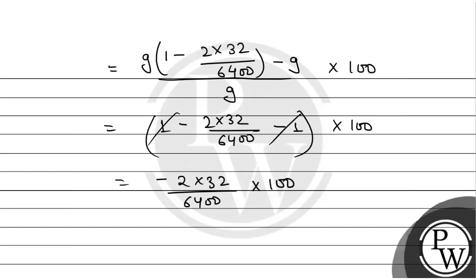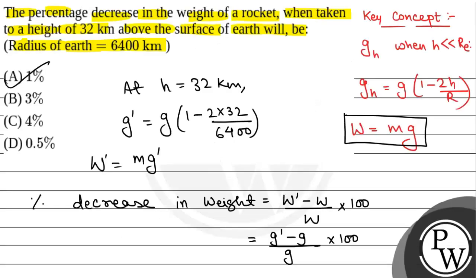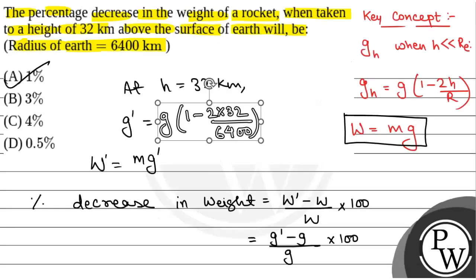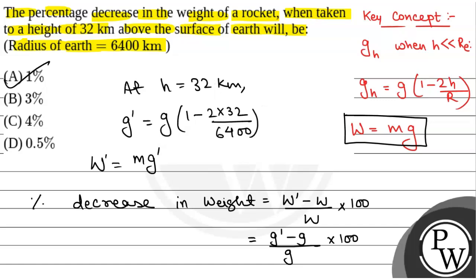The negative sign indicates that the weight is decreasing. So the percentage decrease in weight will be 1%. The correct option is option A: 1%. Hope you all understood. Best of luck!